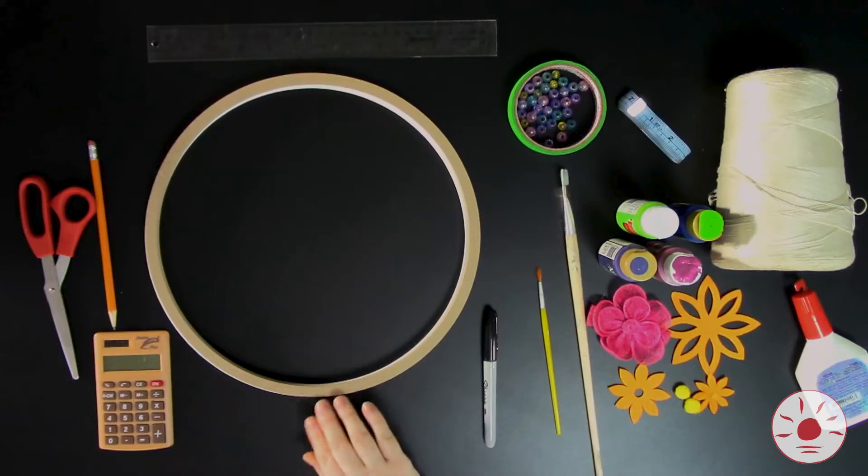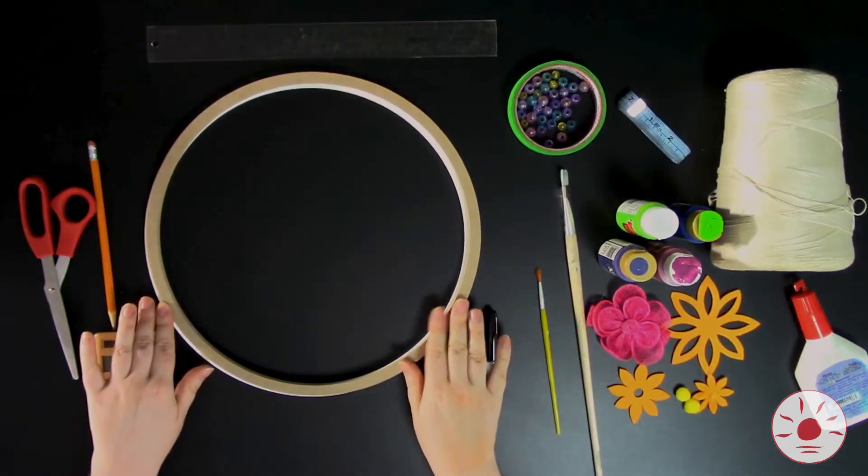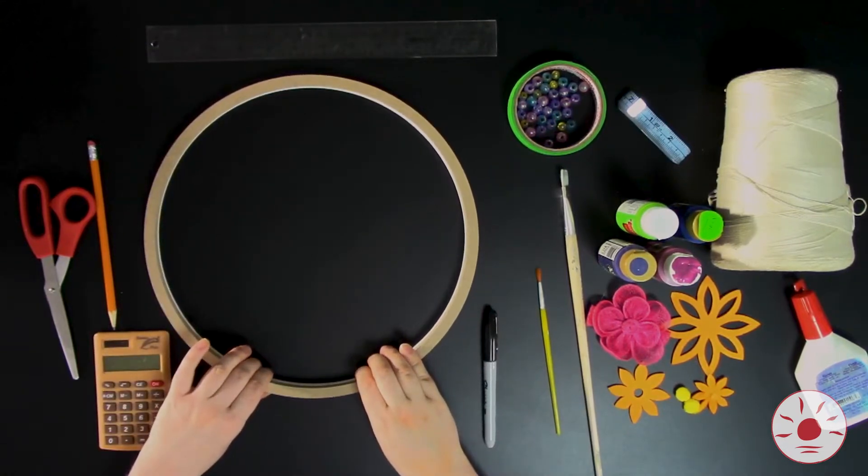For this project, we're going to need a ring. We're using a ring from the craft store, but there are a lot of different rings you can use. You can also cut the center out from a container lid and use that. Just make sure the edge isn't too sharp.